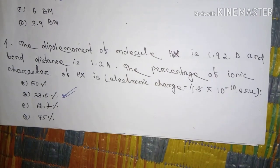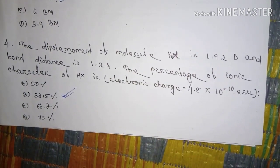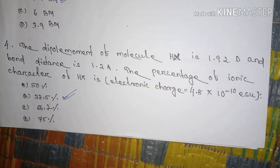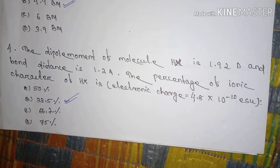Number four, the dipole moment of molecule HX is 1.92 debye and bond distance is 1.2 angstrom. The percentage of ionic character of HX is 33.5 percent.